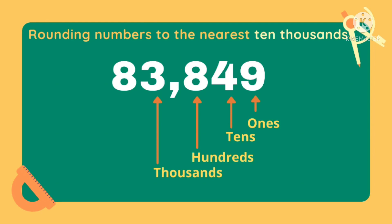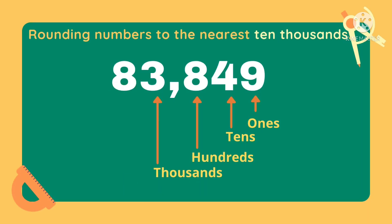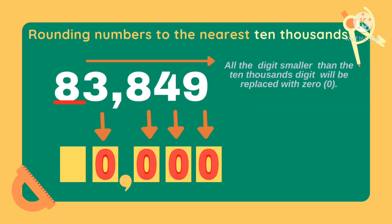In this example, what digit is in the ten thousands place? Very good! 8 is in the ten thousands place, so let's put an underline to show that 8 is the digit we need to round off. Next, all the digits to the right of 8 will be replaced with 0. So 9 will become 0, 4 will become 0, 8 will become 0, and 3 will become 0.